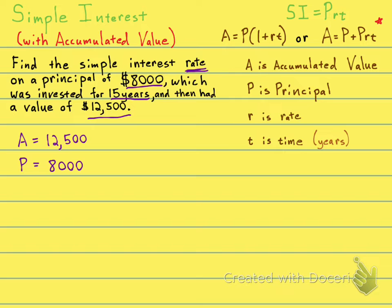They also give us the time invested, which is 15, and the rate is what we're looking for. So, our rate is unknown. I'll just put a question mark.